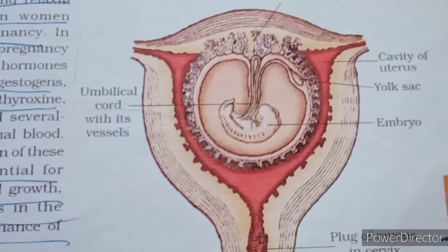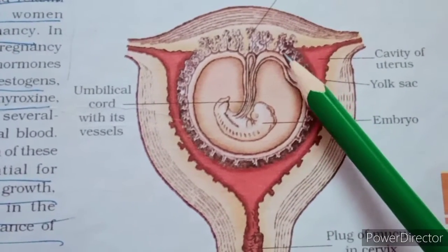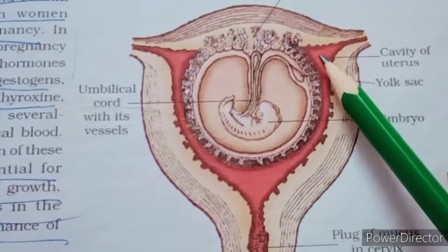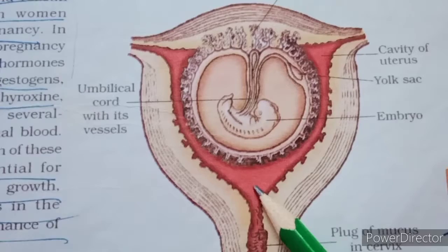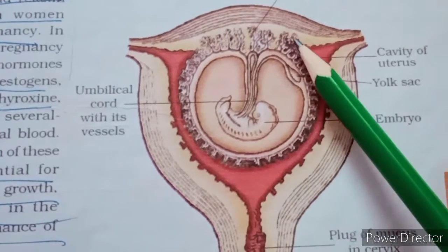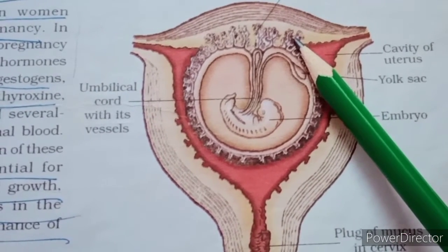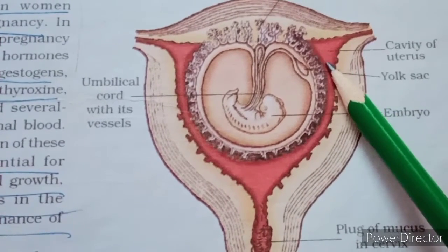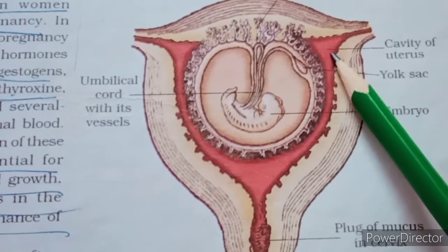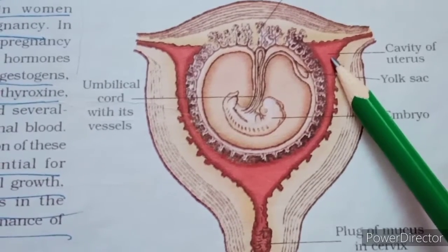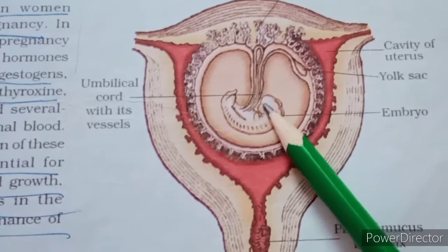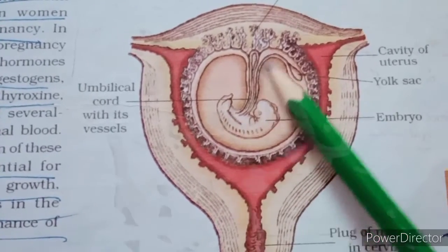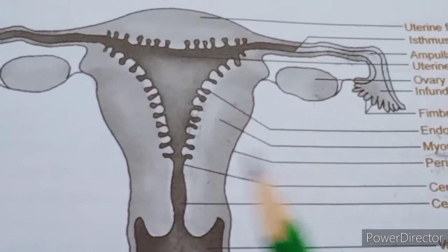The disc-shaped placenta is surrounded by many finger-like projections called placental villi around the fetus, with blood spaces around the mother. The villi increase the surface area for absorption of glucose, minerals, amino acids, and oxygen from the mother to the developing embryo. Waste products from the embryo are sent back to the mother.